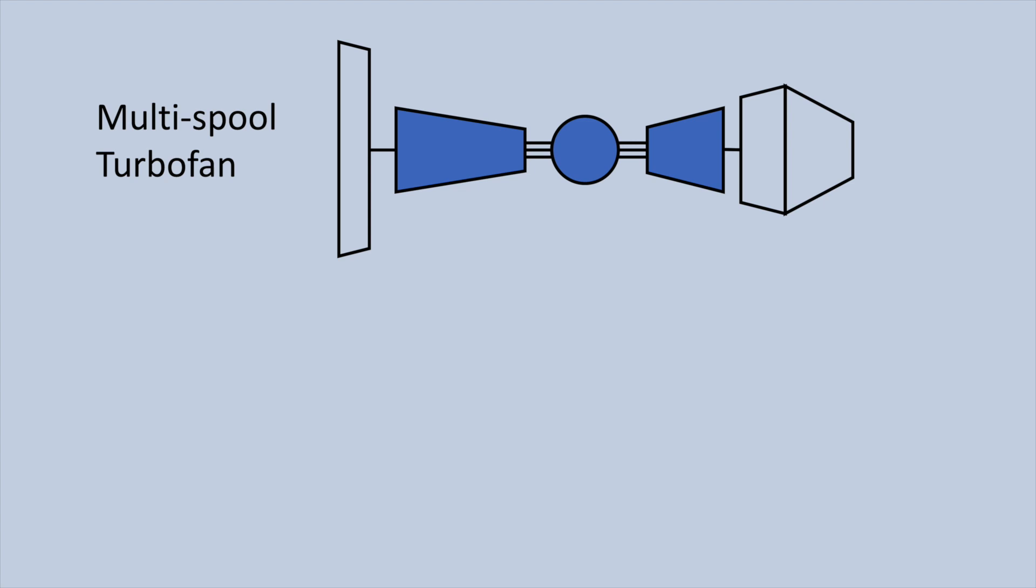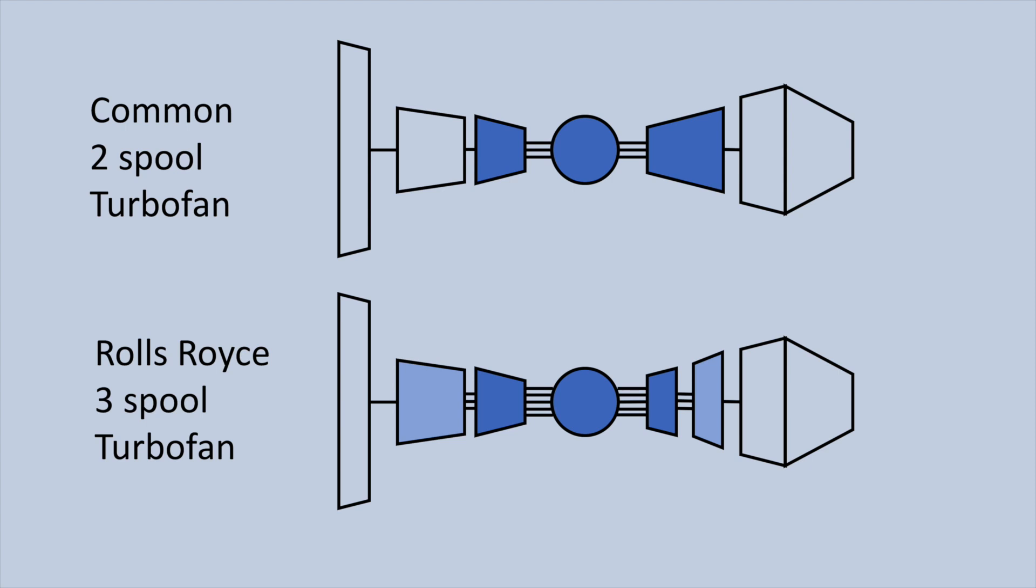It is common in such designs to split the compressor into two stages, and to drive the low pressure compressor on the same shaft as the fan. Rolls-Royce, on many of their larger engines, even split the turbine into three stages, and drive the fan with its own power turbine, while the low pressure compressor is driven by an intermediate pressure turbine.